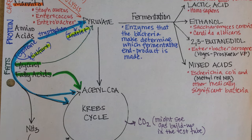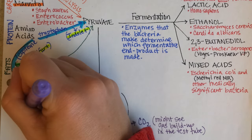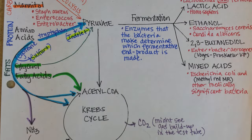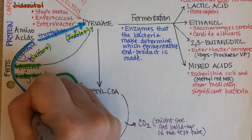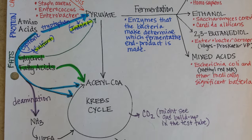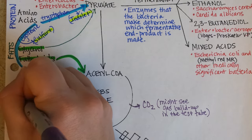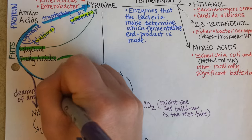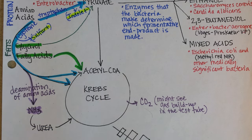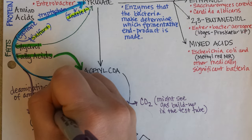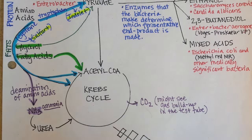If bacteria are going to use amino acids to make ATP, they have to deaminate them — they have to take the amine group or ammonia off of it. Humans have to do this too, not just bacteria. You have to deaminate an amino acid to get ATP out of it, and what you're left with is a toxic byproduct called ammonia. In humans, ammonia is converted into urea in the liver, while bacteria can simply excrete it.